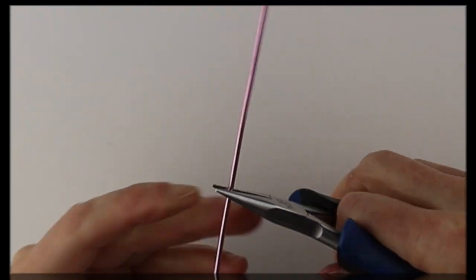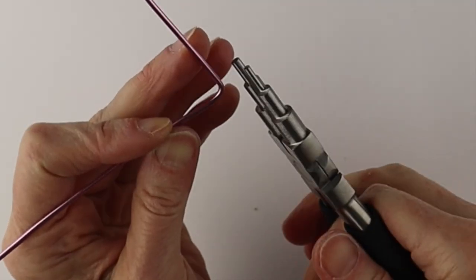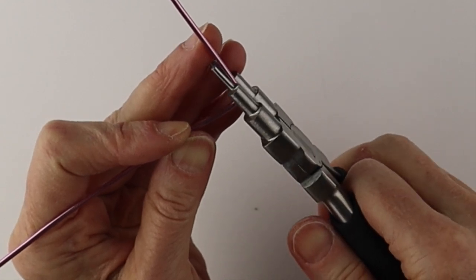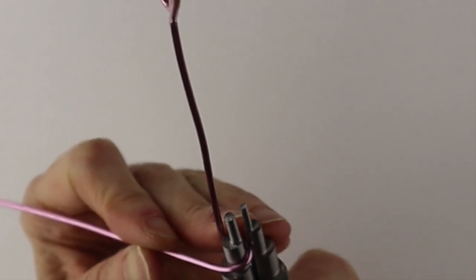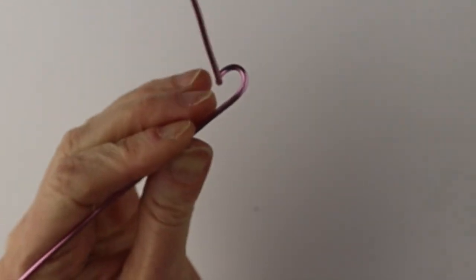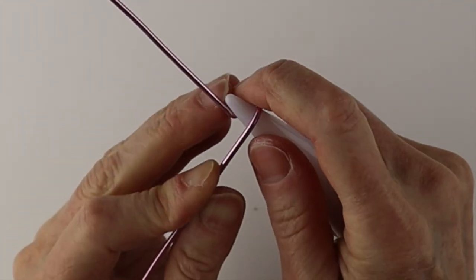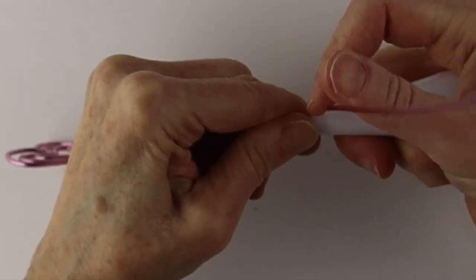Adjust it and then we're going to bend it out at an angle. Start a little loop with your round pliers or the looping pliers. Just bring it around to get that loop started and then I'm going to get my ring cone and we're going to form a spiral.